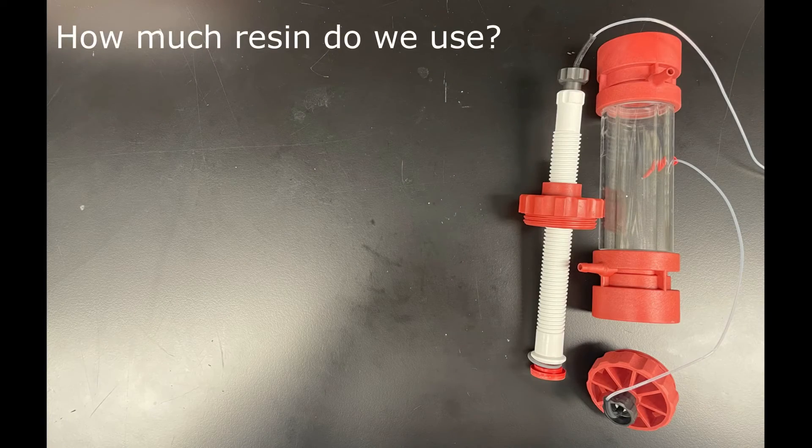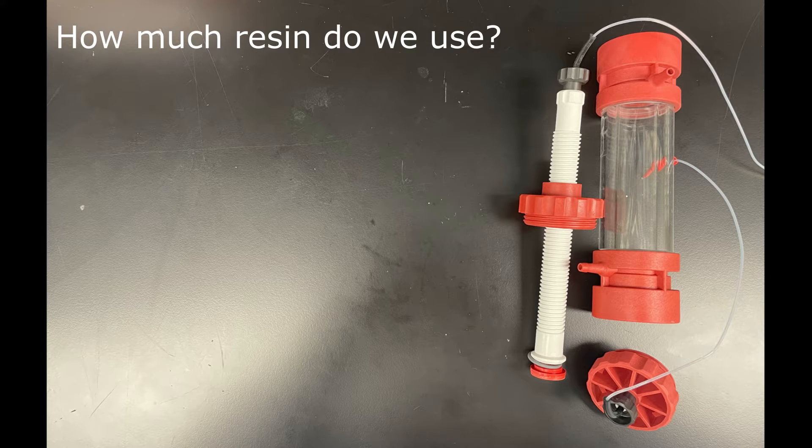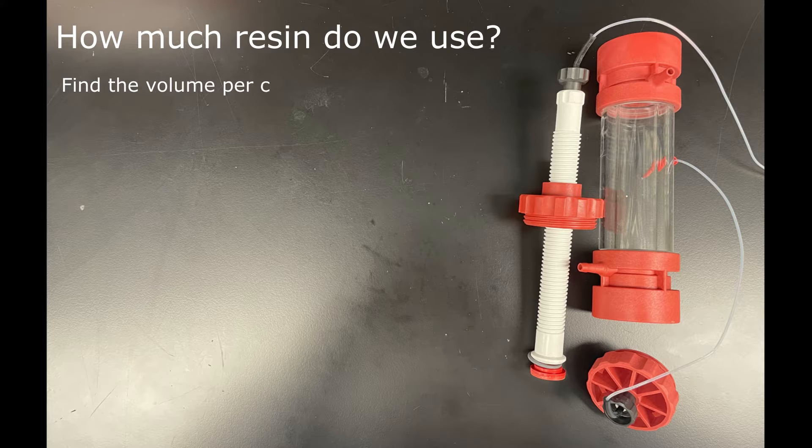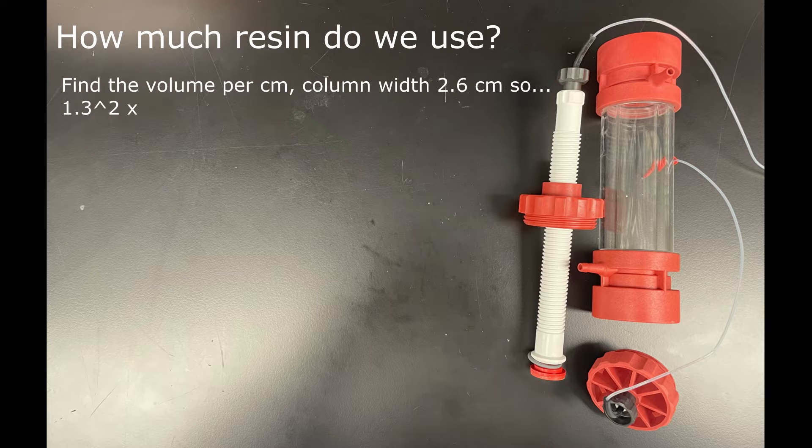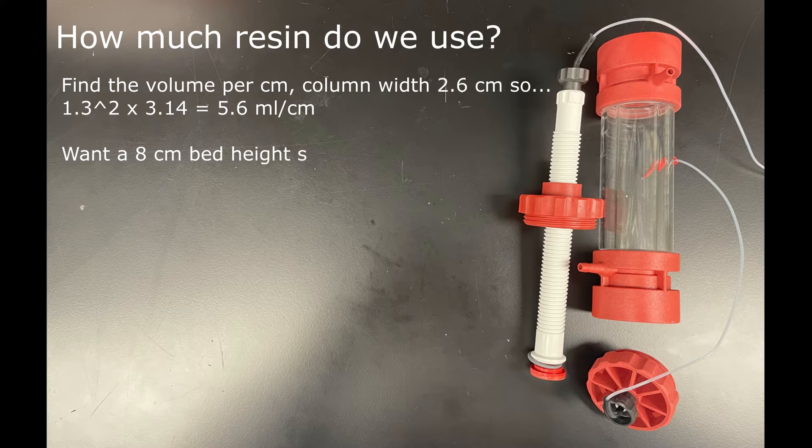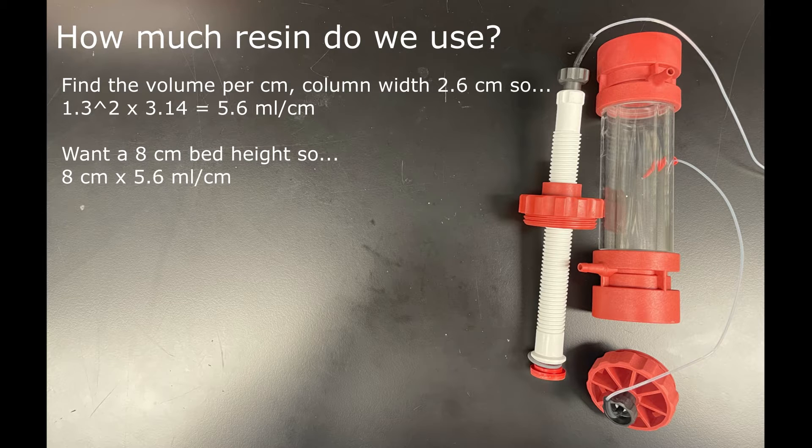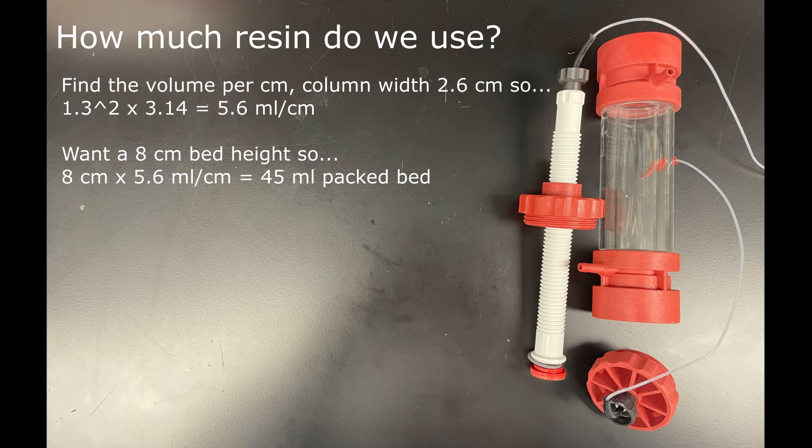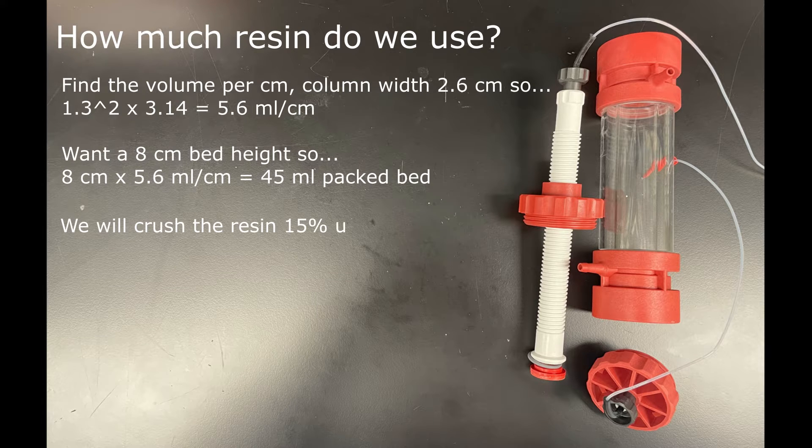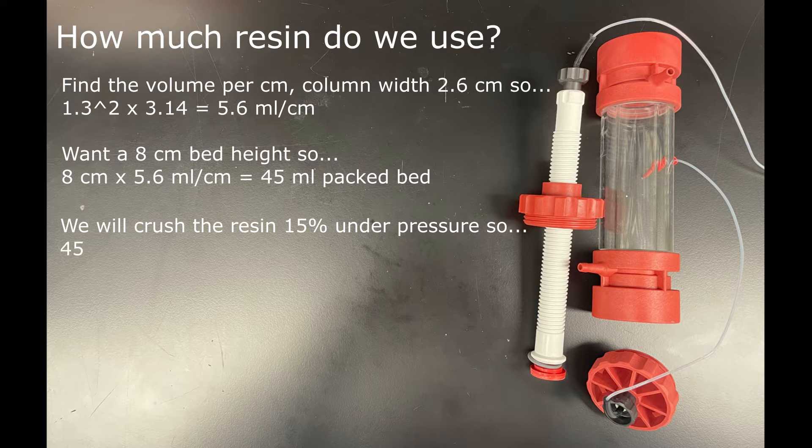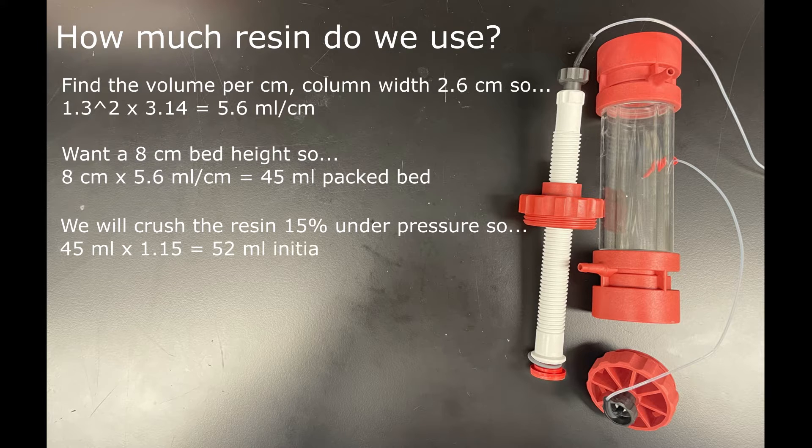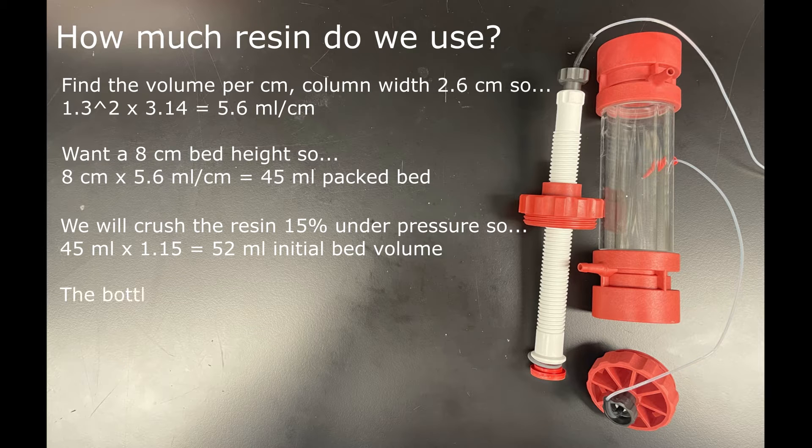The next thing we need to do is figure out how much resin we're going to use. First, we'll find the volume of a column per centimeter. The column is 2.6 centimeters wide, so we'll multiply the radius squared times pi. It's 5.6 mils per centimeter. I want the column height to be 8 centimeters, so multiply 8 times 5.6. The column bed when we're done should be 45 mils. We will crush the resin 15%, so we'll multiply 45 times 1.15. The volume of the bed before we crush it is going to be 52 mils.